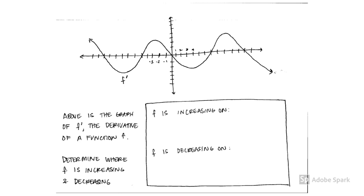Here's the second part of your assignment. This is the graph of f prime — decide where f prime is positive and negative, and then translate that into where the function is increasing and decreasing. Good luck everyone, hope you're well.